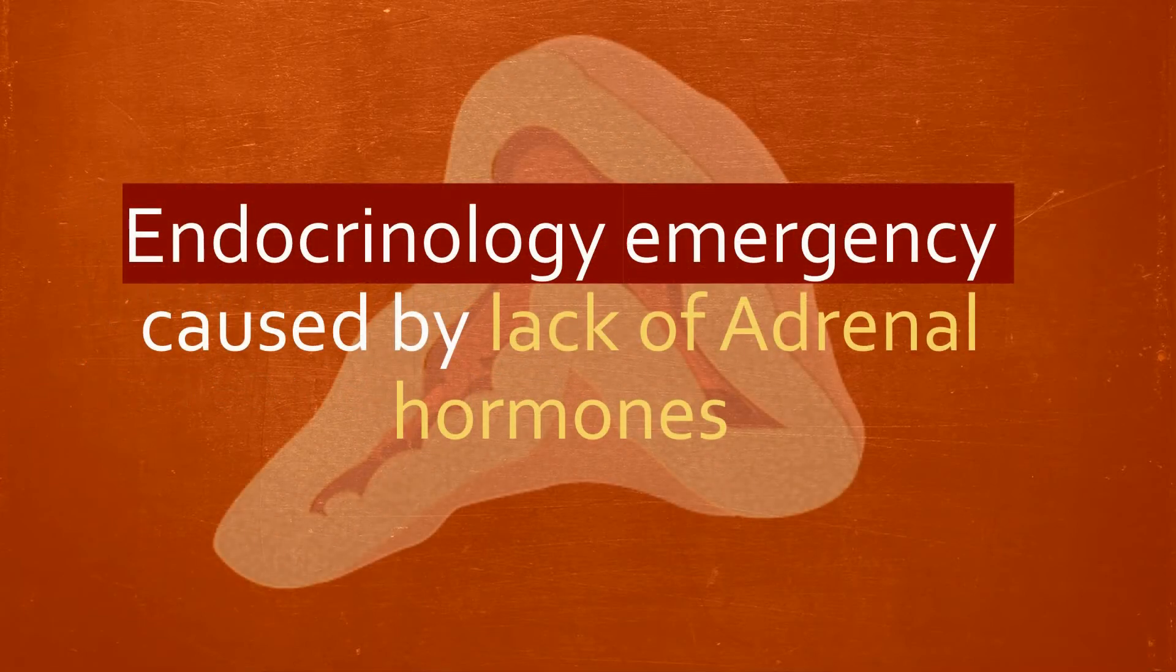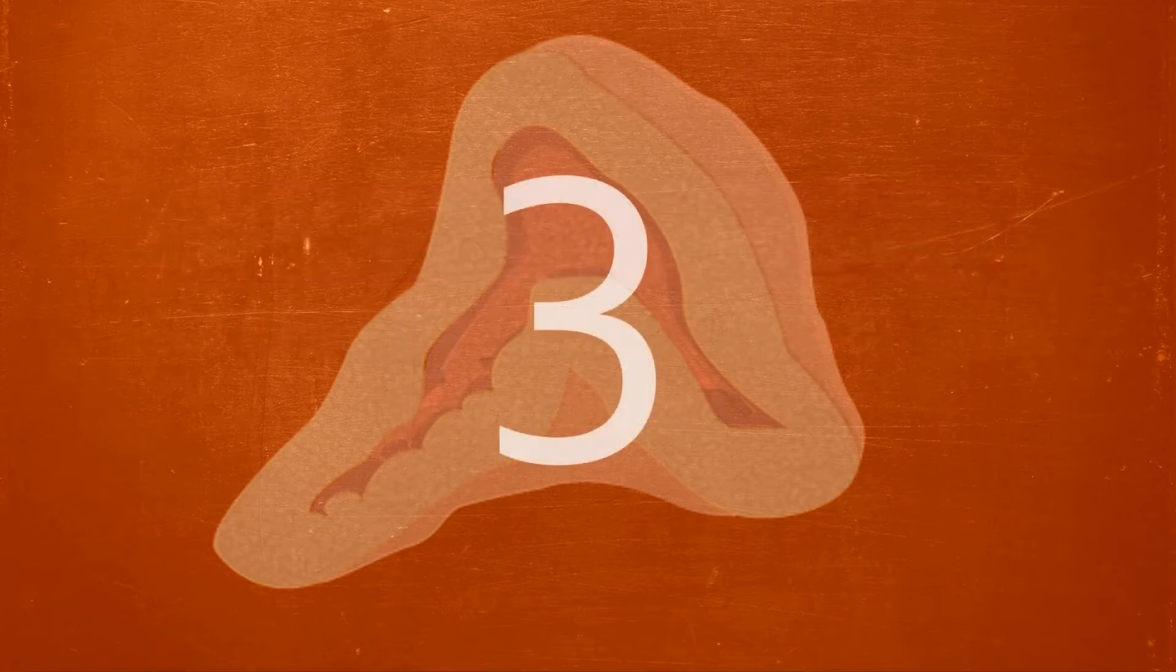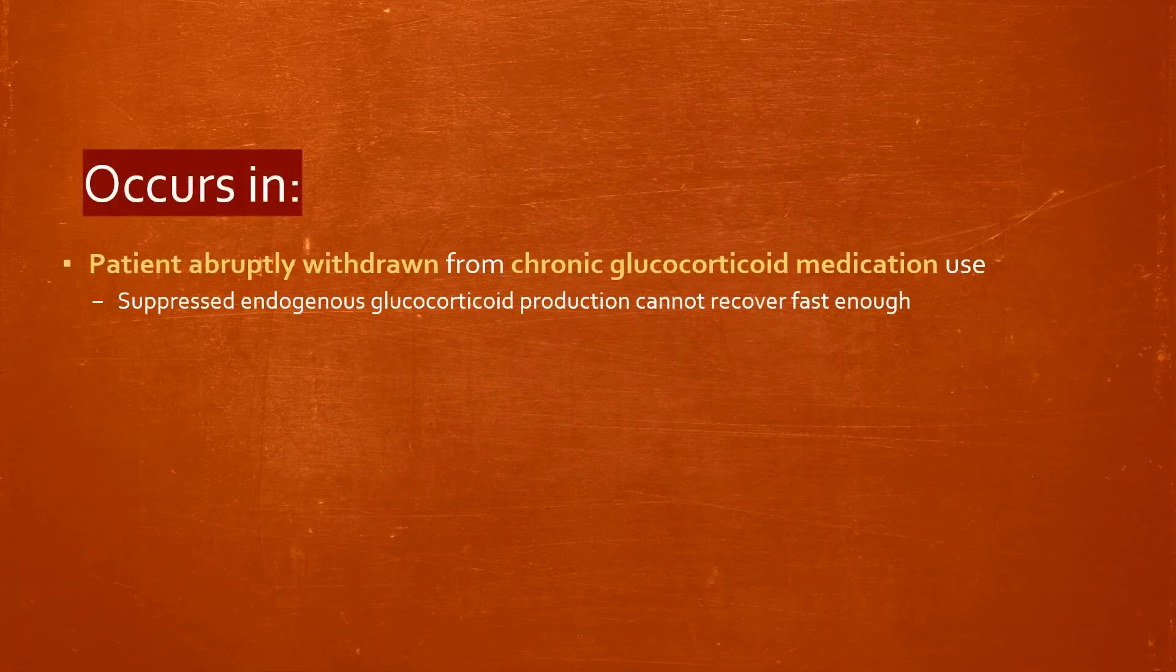Broadly speaking, this occurs in three instances. The first is when a patient's glucocorticoid medication such as prednisolone or hydrocortisone is abruptly stopped. Since they have been on this medication for a long time, the body does not pick up endogenous production quickly, resulting in the deficiency.